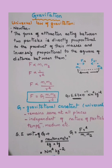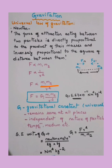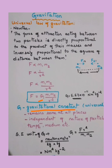Combining the two proportionalities — the directly proportional term goes in the numerator and the inversely proportional term goes in the denominator. When we remove the proportionality sign and write an equation, we introduce a constant G, called the gravitational constant or universal constant. The value of G is 6.67 × 10⁻¹¹ Newton meter square per kg square.